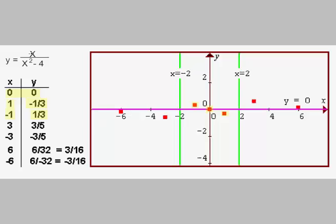We plug in x equals 3 and we get 3 over 3 squared minus 4, or 3 over 9 minus 4, and that simplifies to 3 fifths. So when x is 3, y is 3 fifths. And when x is negative 3, we get y equals negative 3 fifths.